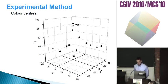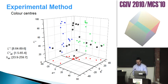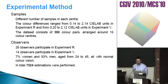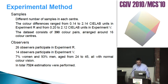In this figure we can see the 16 centers located in CIELAB space. The centers have CIELAB coordinates in the range 8 to 90 for lightness, 1.5 to 65 for chroma, and 34 to 260 degrees for hue angle. Different numbers of samples were considered in each center, differing in lightness, chroma, hue, or combinations thereof. The color differences range from 0.14 to 2.14 CIELAB units in Experiment R and from 0.20 to 2.12 CIELAB units in Experiment B. Combining both experiments, the data set consists of 390 color pairs around the 16 color centers.